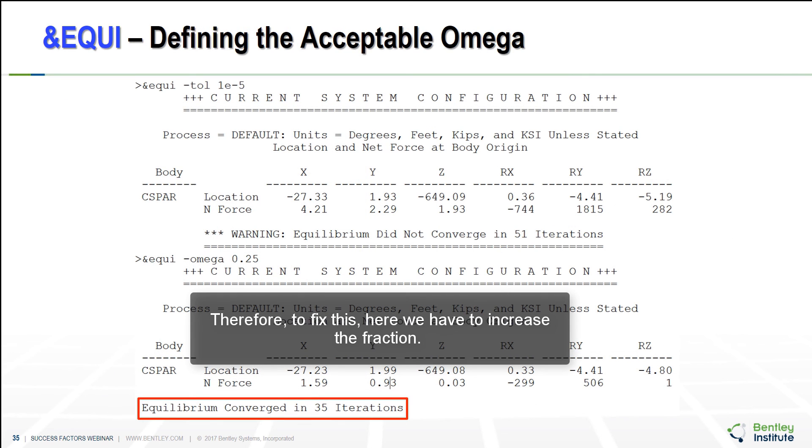Therefore, to fix here, we have to increase the fraction. We see that it just needed to move a smaller step than it was taken before. It only took 35 iterations to find equilibrium.